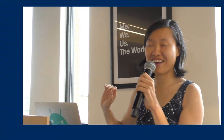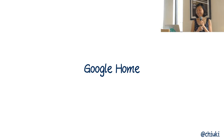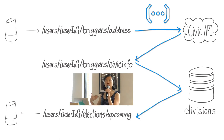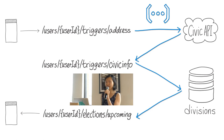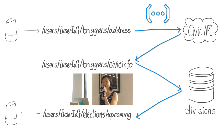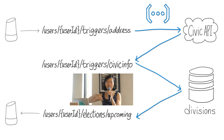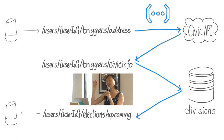So how does that work? It's exactly the same architecture diagram. All I needed to do was change the front end — from the app to Google Home. The input was by voice, but I did exactly the same thing: the Google Action writes to that specific trigger location that the Cloud Function watches, then fetches the information.